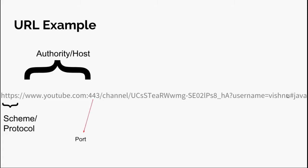443 is the port number. In order to establish a connection between two computers we need a port number. If you don't specify a port number, it will take the default port number based on the protocol being used. For HTTPS the default port is 443, and for HTTP it is 80.